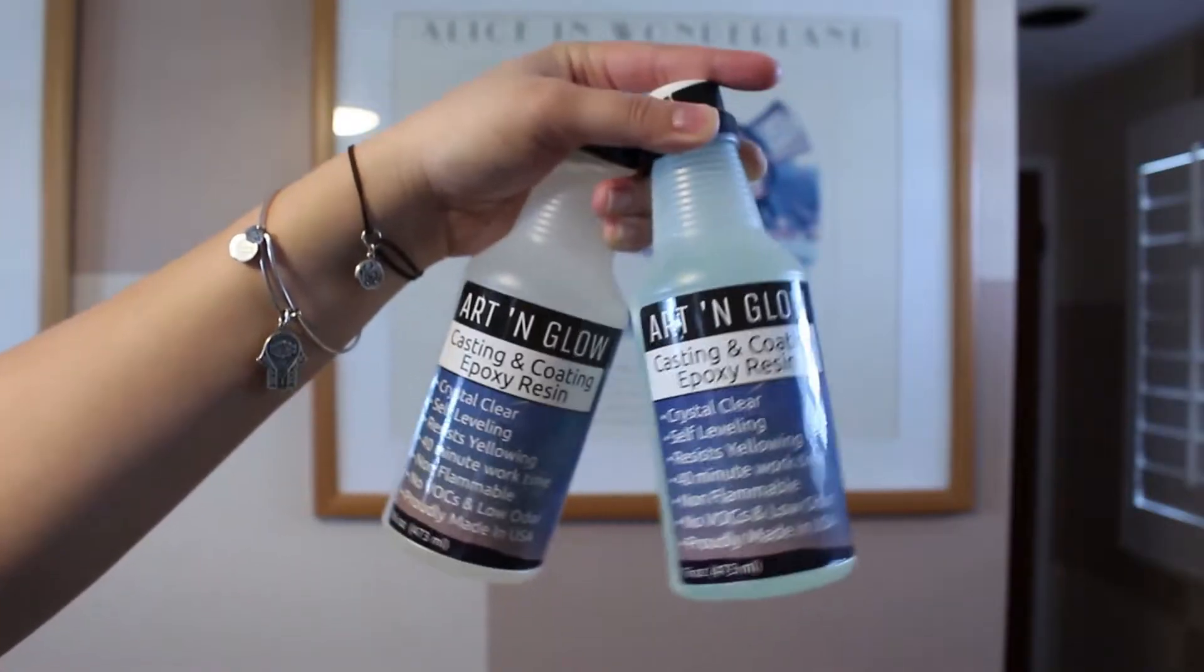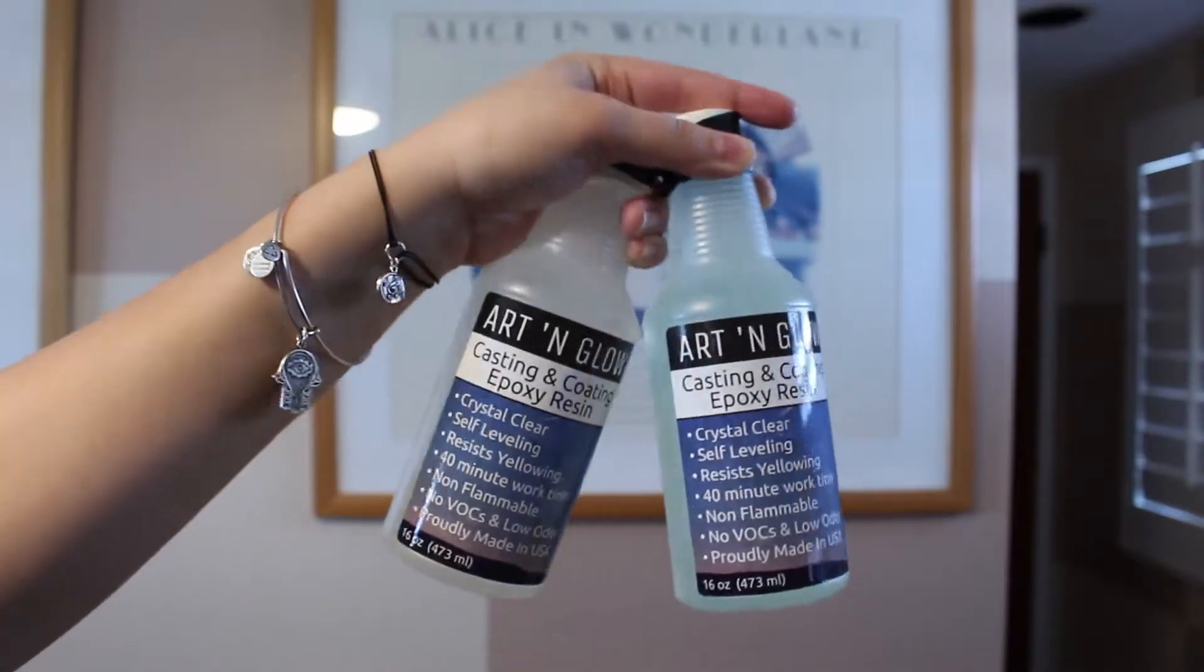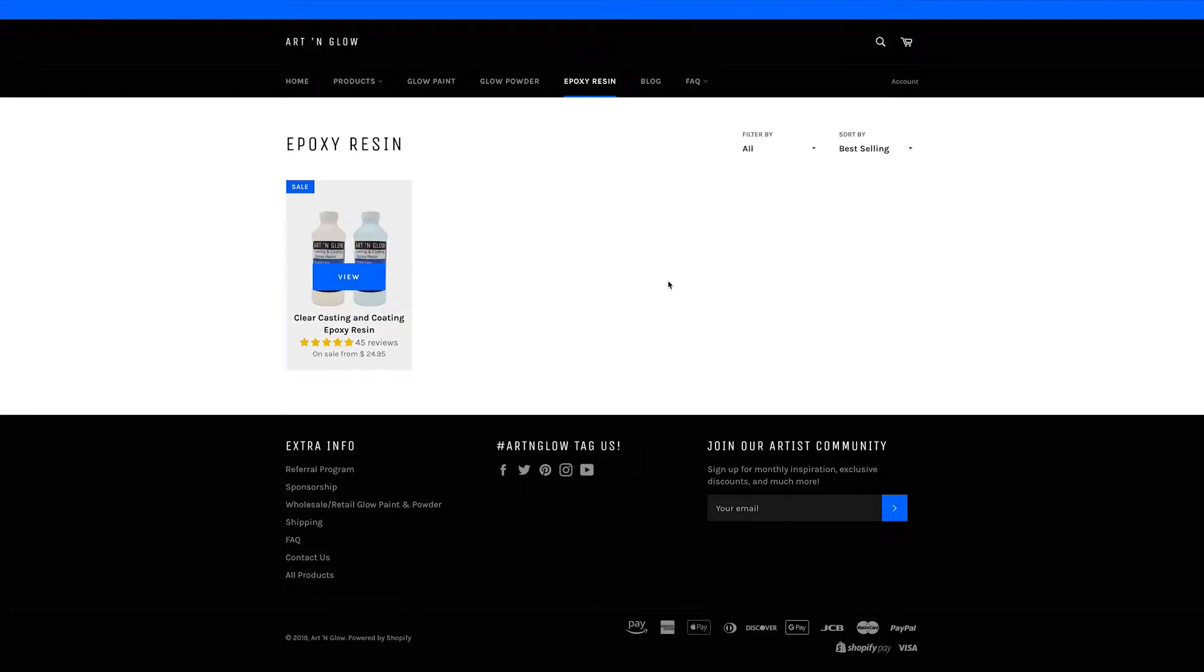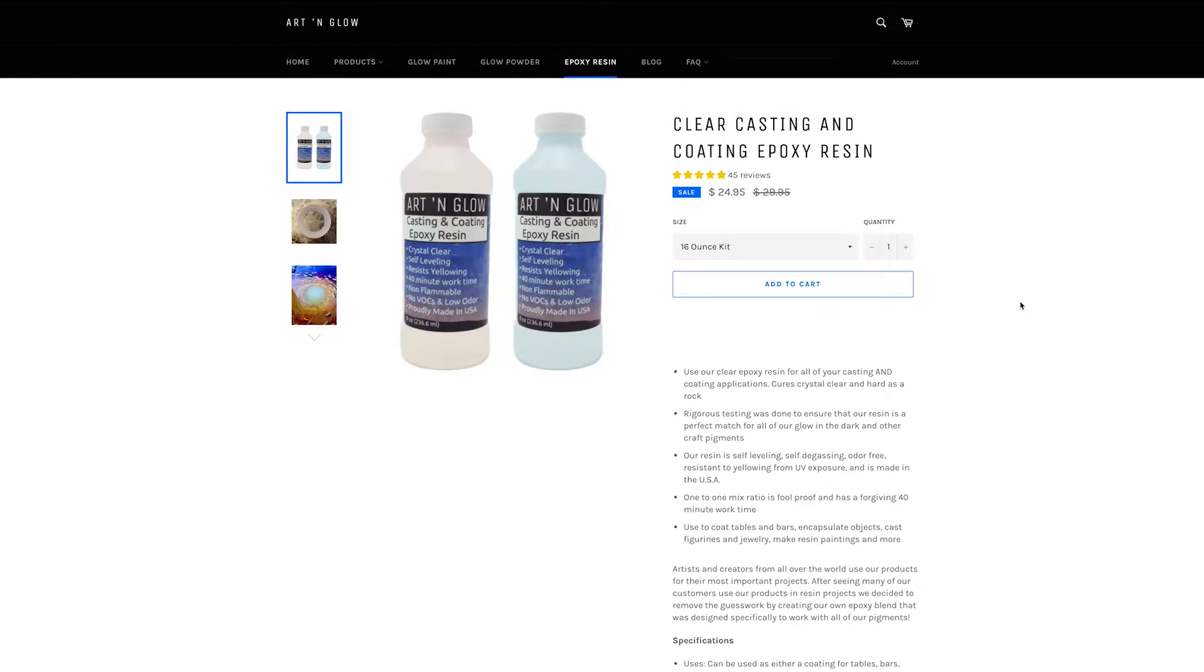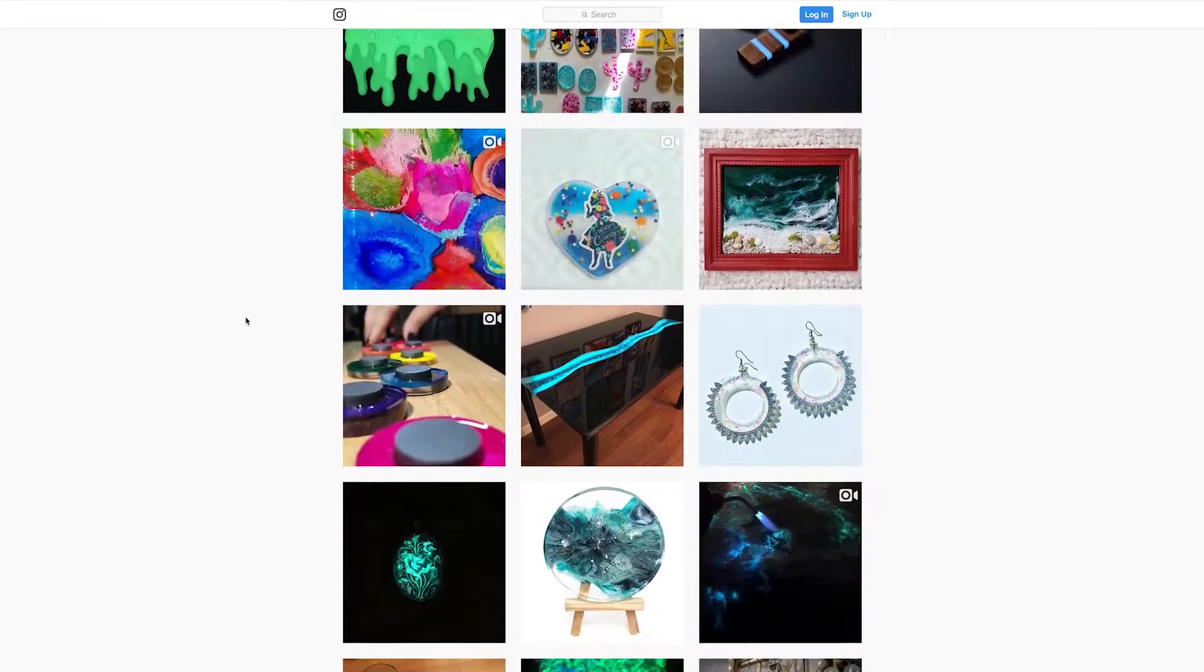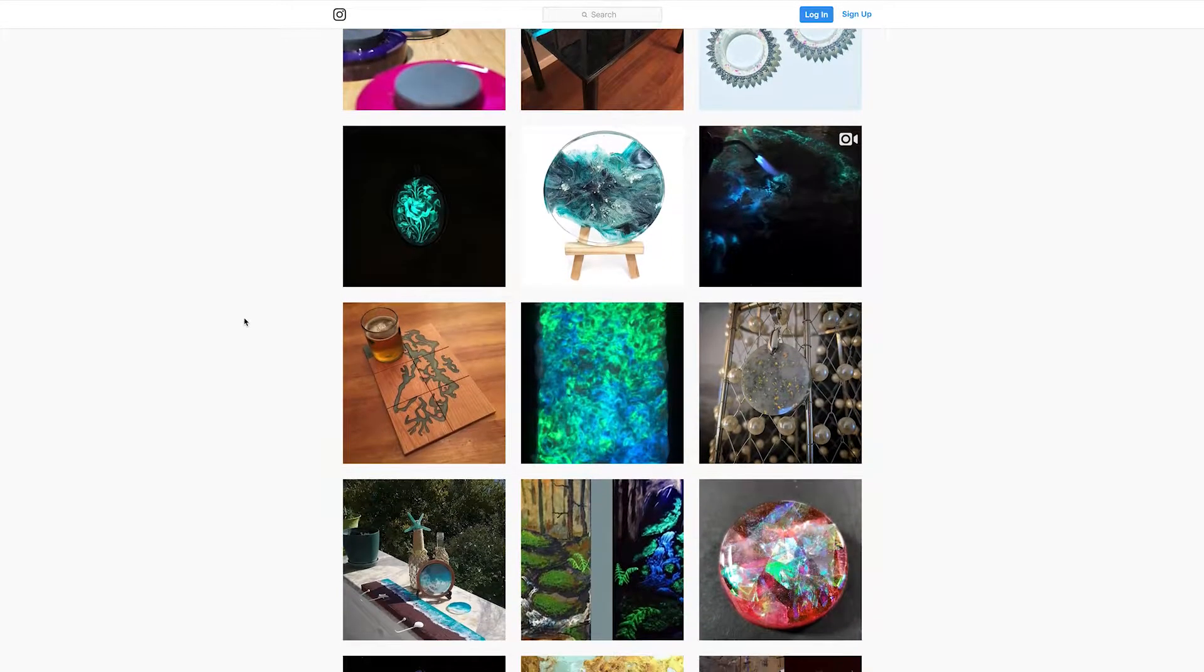I made some of these for some family members for Christmas and they asked me about my process so I'm going to show you how I made them today. Today I'm using resin from Art and Glow who I found on Instagram. You can buy their products from their website or on Amazon. I'll leave their links down in the description along with the other products I use in this video. Here's what you'll need.